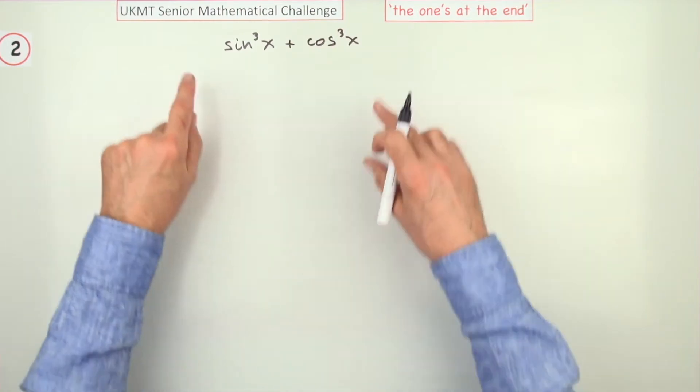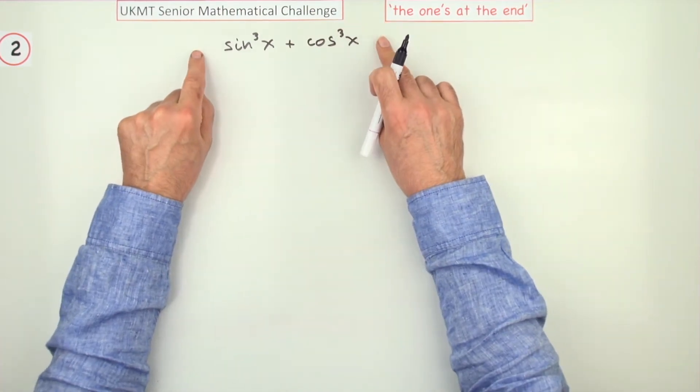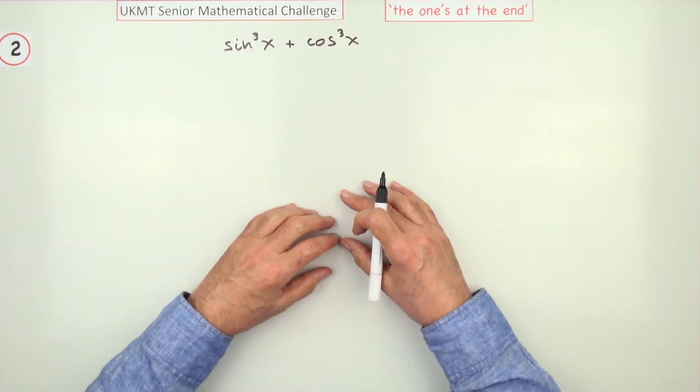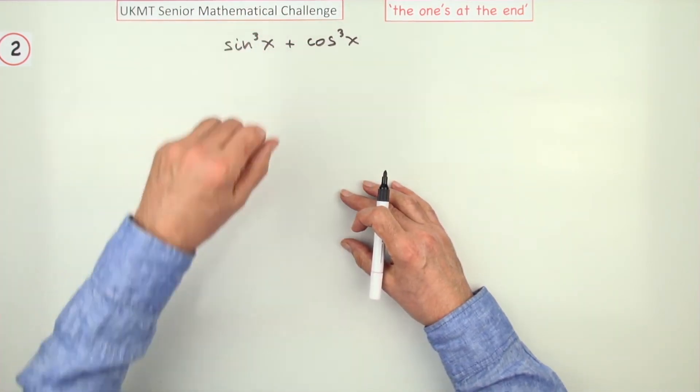Just taking this at face value as a trigonometrical expression. You'll notice that the answers don't involve powers of the individual trig terms, so the first thing would be to get rid of them.